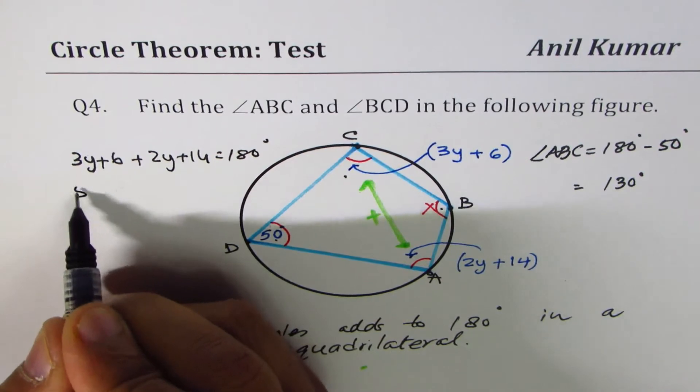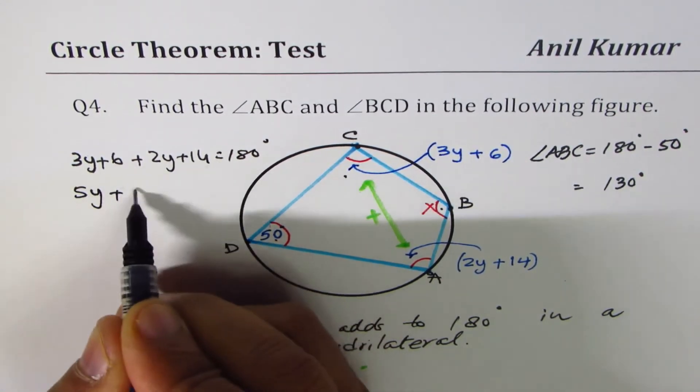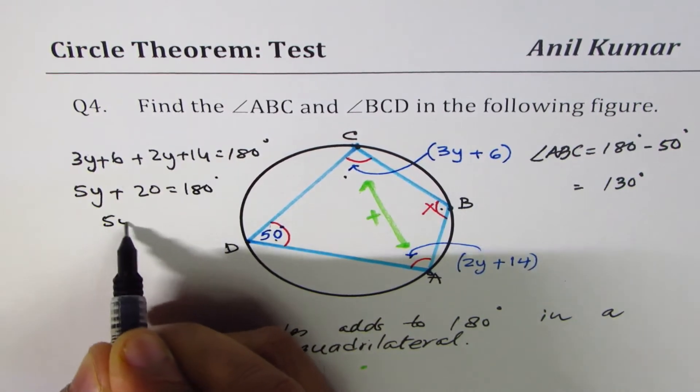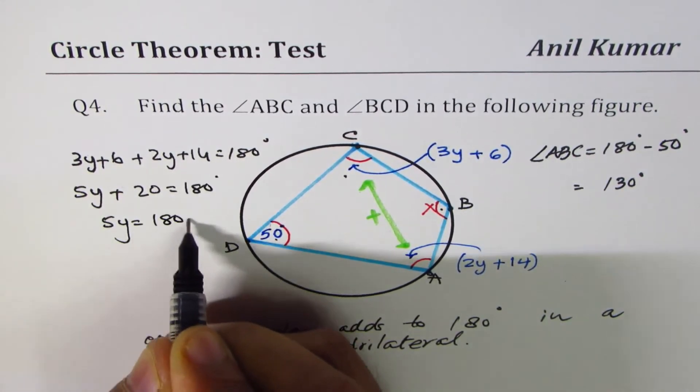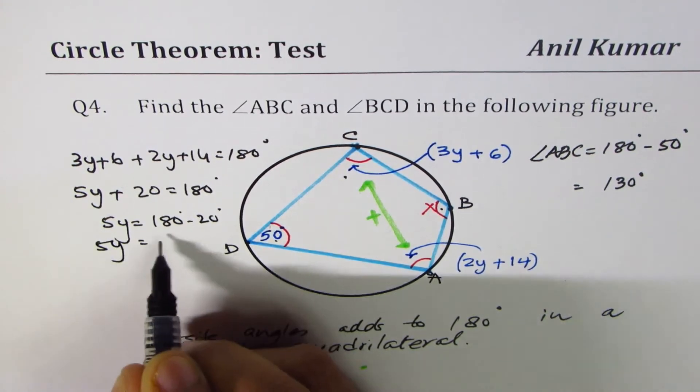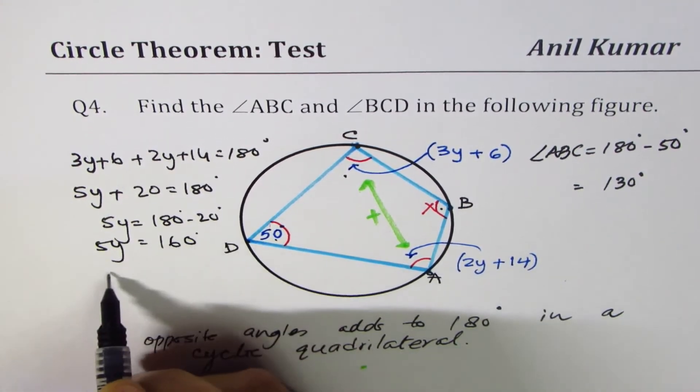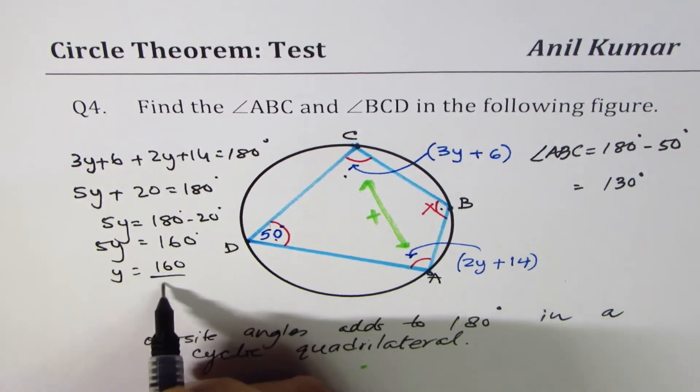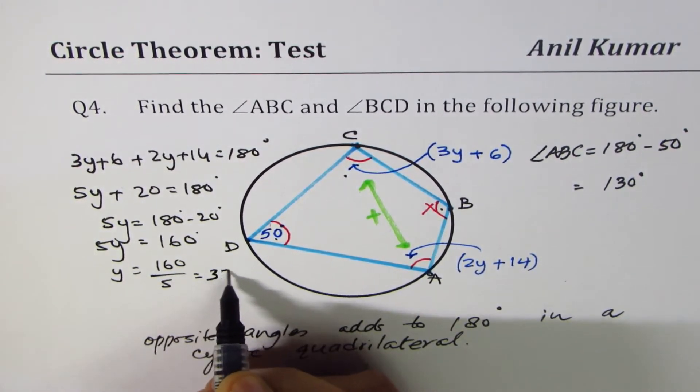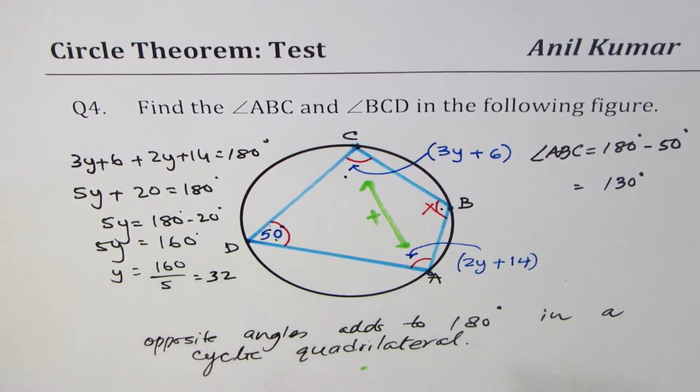3 plus 2 is 5. So 5y plus 6 plus 14 is 20 equals 180 degrees. 5y equals 180 take away 20. So 5y equals 160. So y is 32.